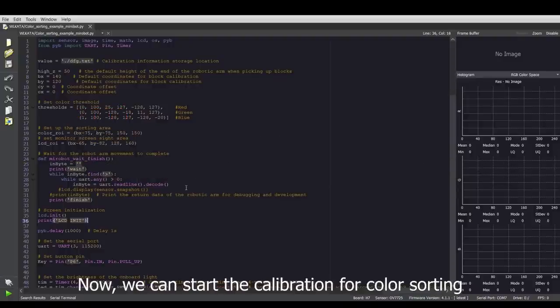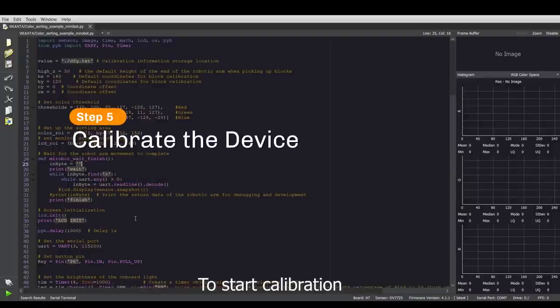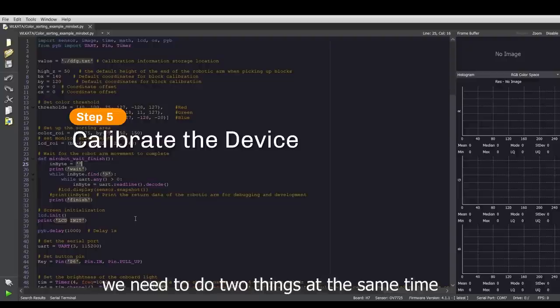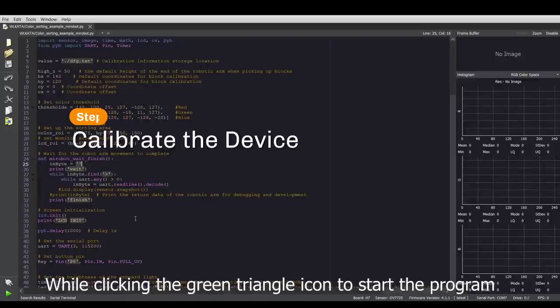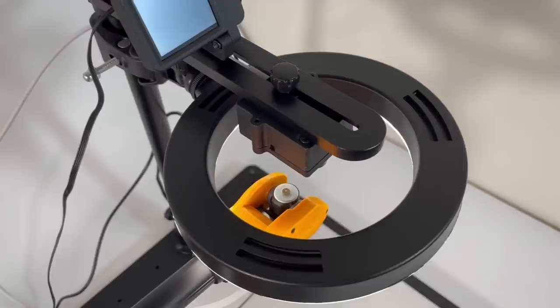Now, we can start the calibration for color sorting. To start calibration, we need to do two things at the same time. While clicking the green triangle icon to start the program, we also need to press the button on the side of the Vision module and release until the robotic arm starts homing.